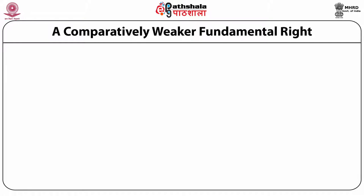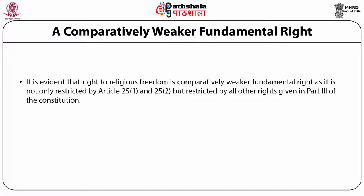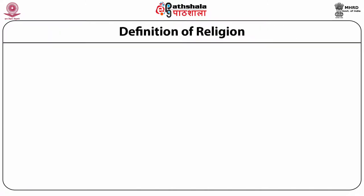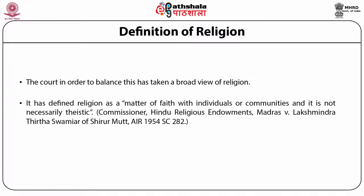Article 25 can be said to be a comparatively weaker fundamental right. The reason for this is that Article 25 is restricted by the other rights in Part 3 of the Constitution, that is the chapter on fundamental rights. It is important to protect the encroachment of basic fundamental rights of one group by another group in the name of its right to practice religious freedom. The court, in order to balance these conflicting considerations, has taken a broad view of religion, defining it as a matter of faith with individuals or communities and it is not necessarily theistic.